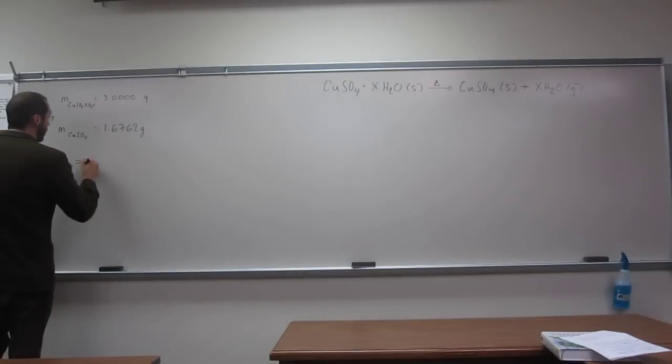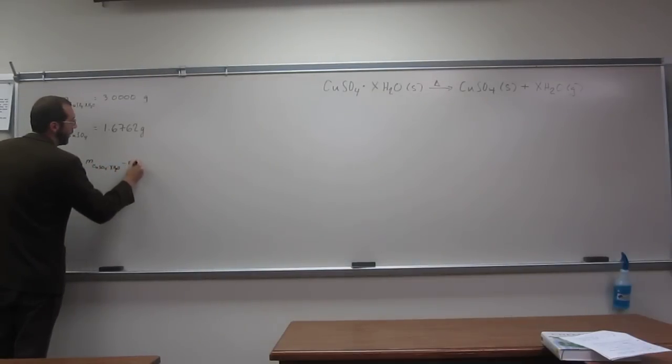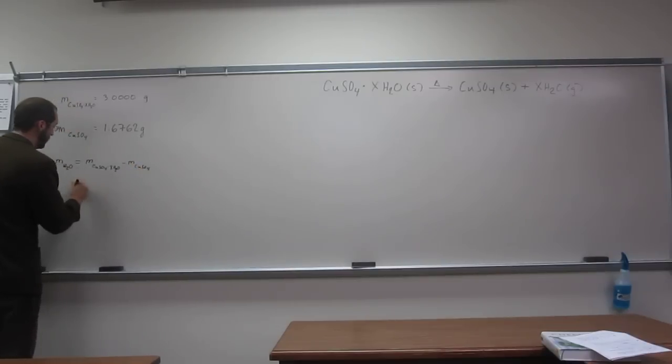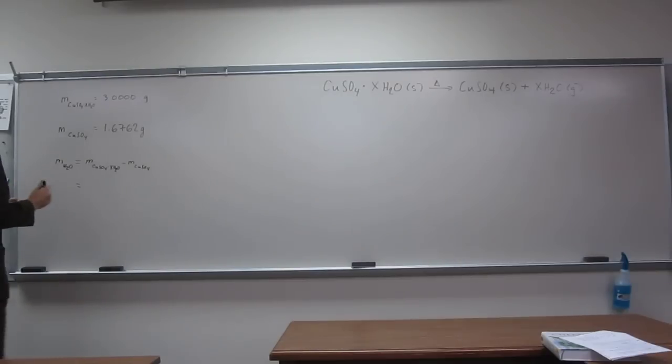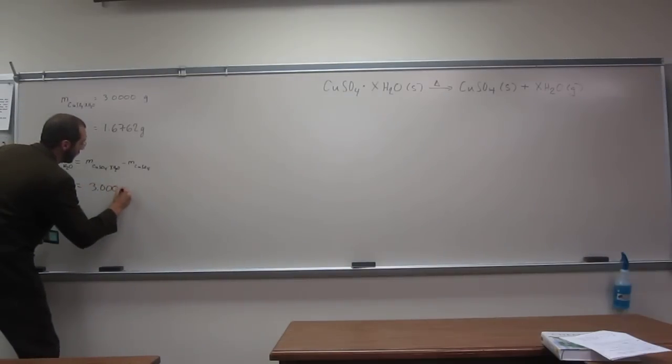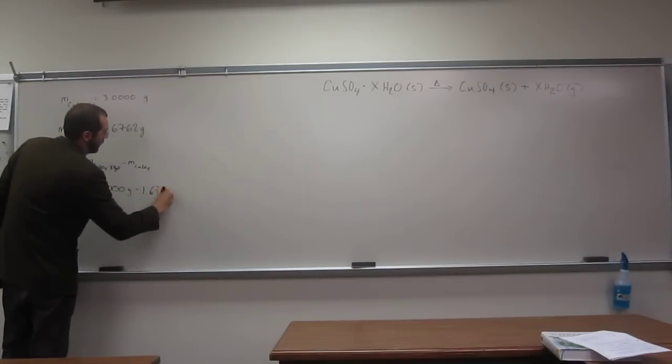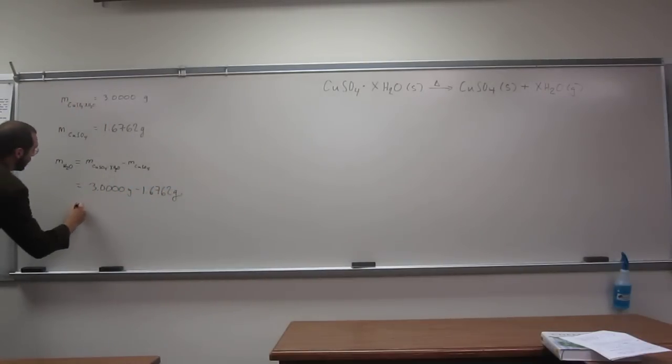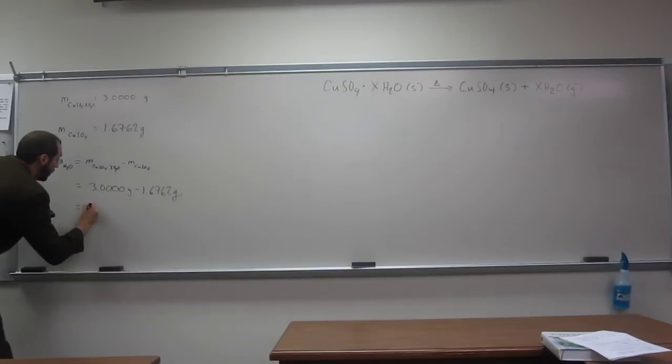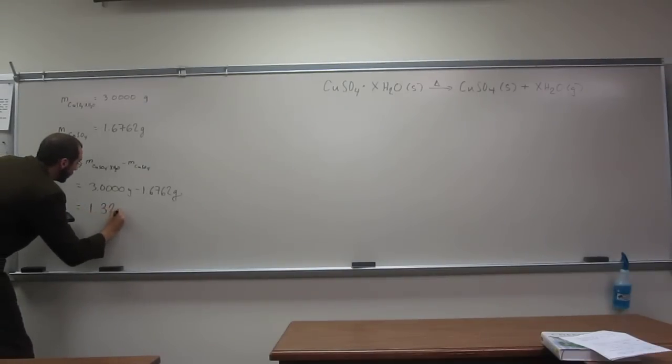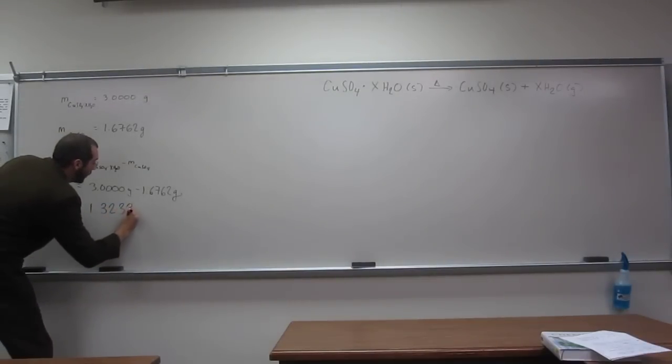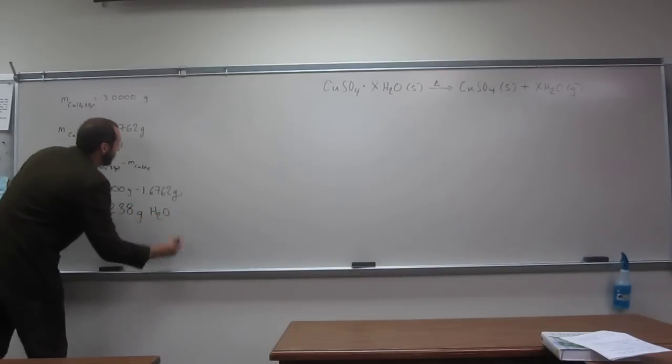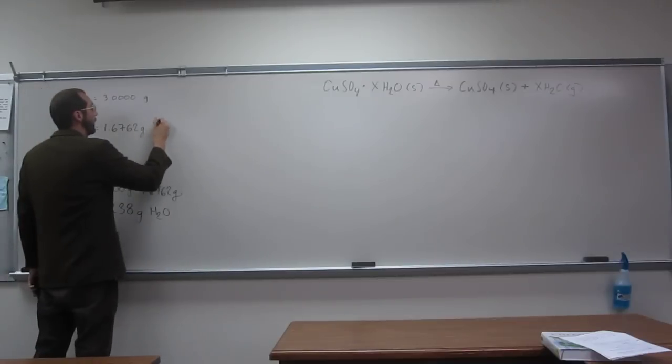It's going to be, of course, the mass of the CUSO4·xH2O minus the mass of the CUSO4. So I'm going to do that. I get 1.3238 grams of water. And so this is the mass of CUSO4.